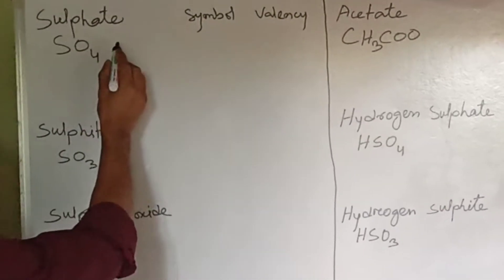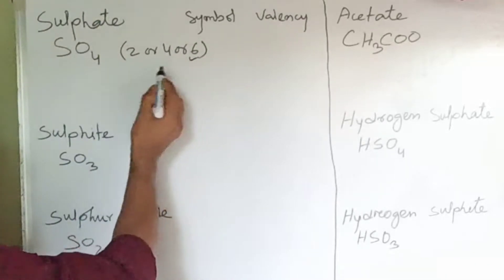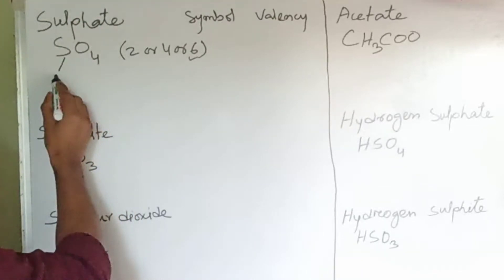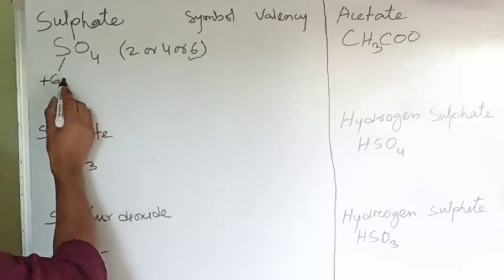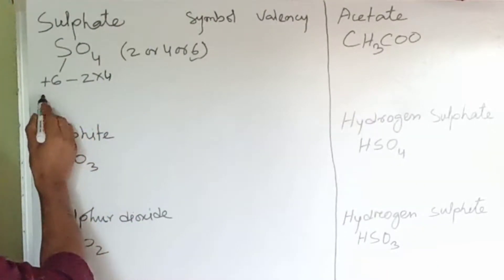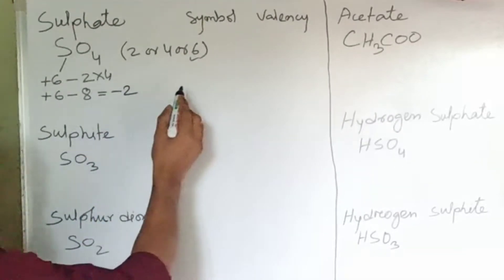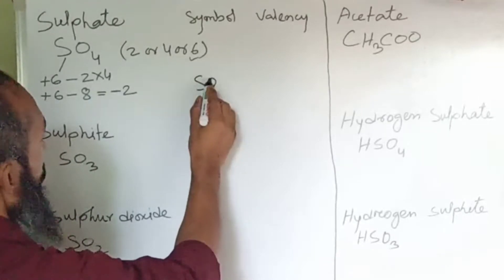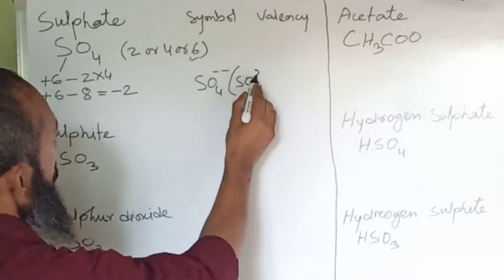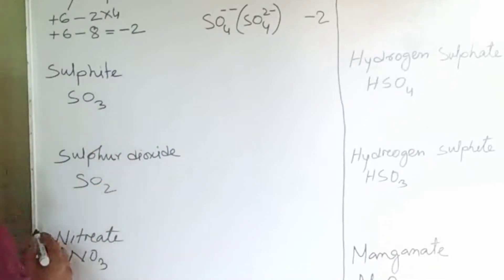Here the valency of sulfur can be 2, 4, or 6, but here we are going to select 6 because the number of oxygen atoms taking part is more. Sulfur is electropositive, oxygen is electronegative with valency 2. Here 4 atoms of oxygen are there, so 4 times 2 is 8. Plus 6 minus 8 gives valency minus 2. Its symbol is SO4 2-minus. This one is an anion with valency minus 2.